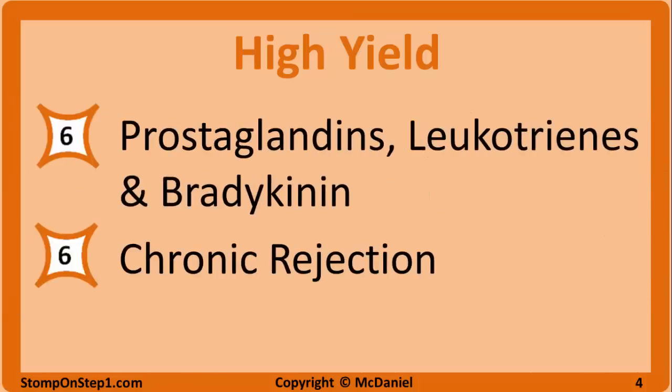With a high yield rating of 6, we have some of the signals for acute inflammation: prostaglandins, leukotrienes, and bradykinin. You want to know the role these molecules play in inflammation, a basic understanding of the pathways and enzymes involved in creating them, how medications like NSAIDs or corticosteroids can inhibit their formation and act as painkillers, and a little about how leukotriene antagonists can be used in asthma.